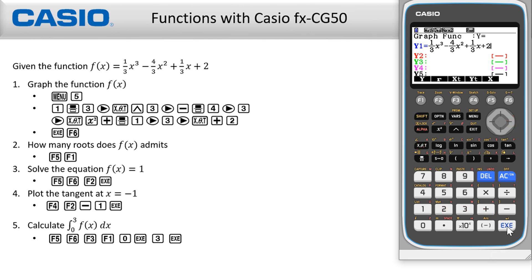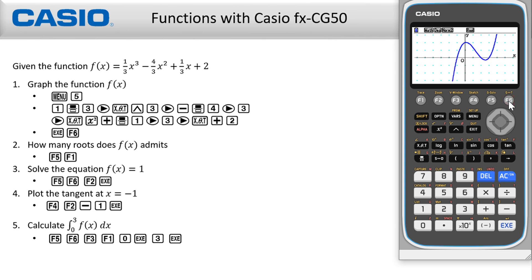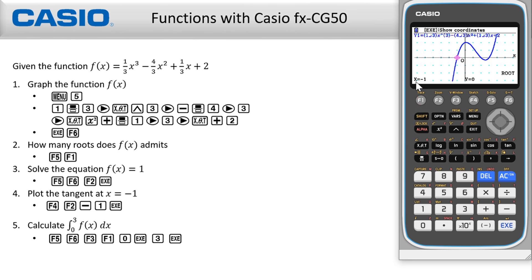Press Execute, then F6 to plot the function. To find the roots, press G-Solve using the F5 button, then select the root option using F1. The roots will appear on the bottom left side of the screen.